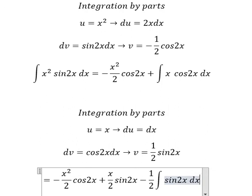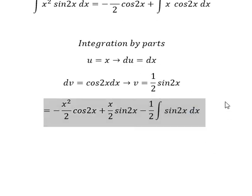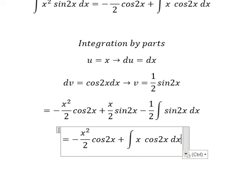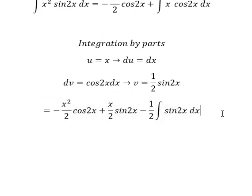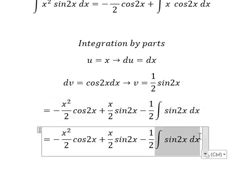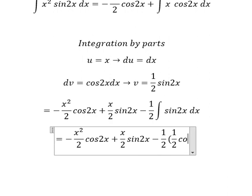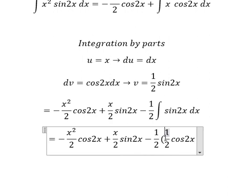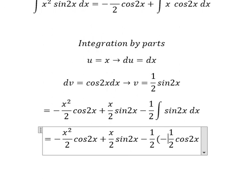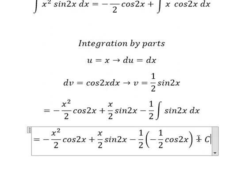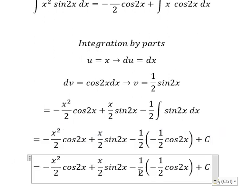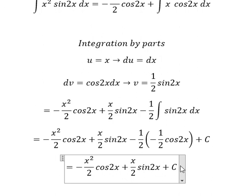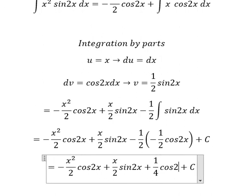The integration of sin 2x, we will have about 1 over 2 cos 2x, and we have negative times negative in here, and we put c. So we have negative x squared over 2 cos 2x, we have positive x over 2 sin 2x, and we have positive 1 over 4 cos 2x plus c.